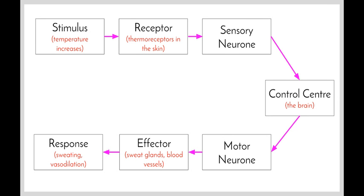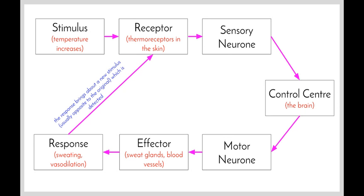Because water is evaporating off our skin and helping to cool us down, and vasodilation has taken place, we now have a new stimulus being formed. The response brings about a new stimulus, which is usually opposite to the original stimulus. Before, our stimulus was the temperature increasing; now with the sweating and vasodilation, our temperature is beginning to decrease. The receptor will detect that and send the message all the way around again. Eventually, the sweating and vasodilation will stop because the temperature has returned to normal. In a feedback loop, the receptors detect the response and send messages back to the control center to stop further adjustment. This is often referred to as negative feedback, because it results in a response that is opposite — the opposite of what already took place.